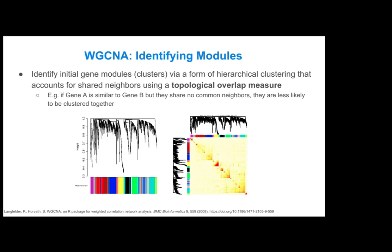Here you can see how it clusters those genes and produces a dendrogram and heatmap visualization. Each gene module or cluster that it detects is assigned a different color, and you'll see these colors repeated throughout the other steps in the process.